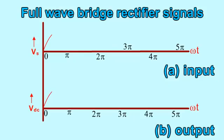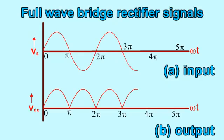The output signal corresponding to the input signal is shown in the figure. The efficiency of the bridge rectifier is approximately 81.2%.